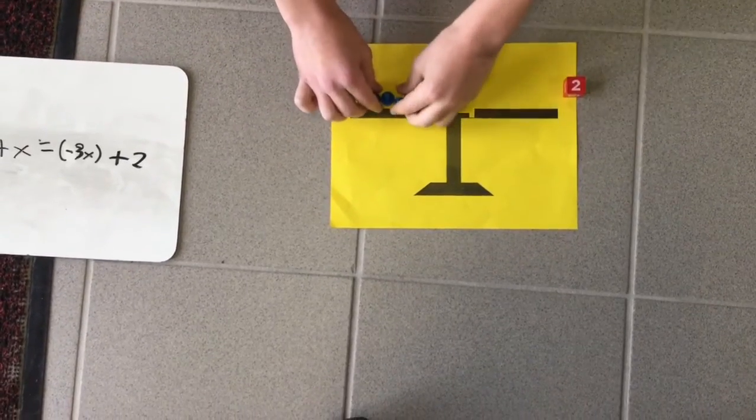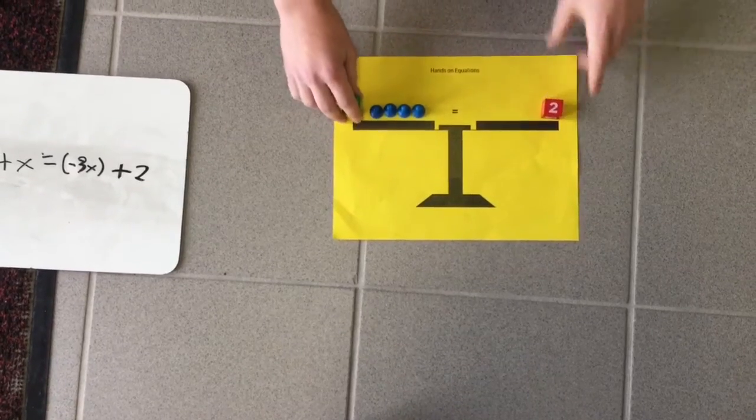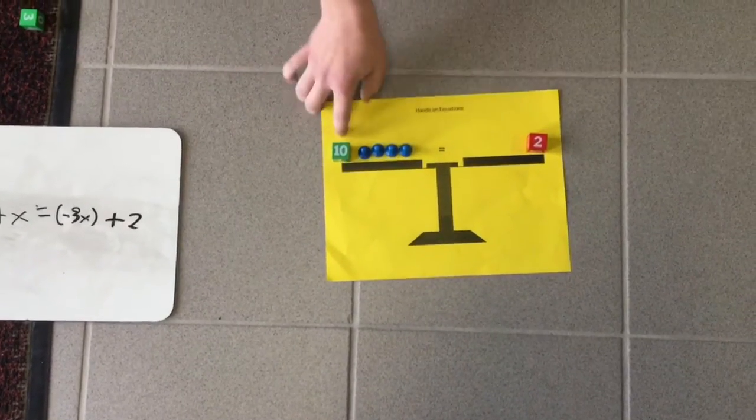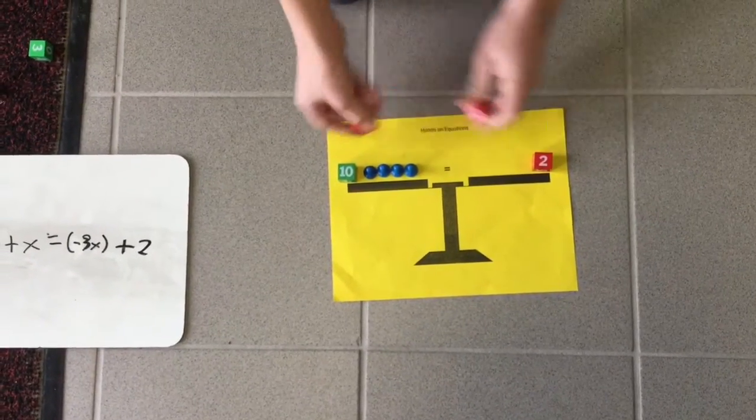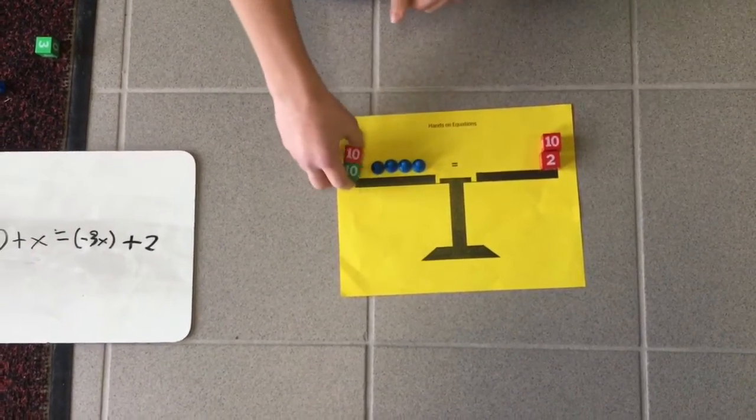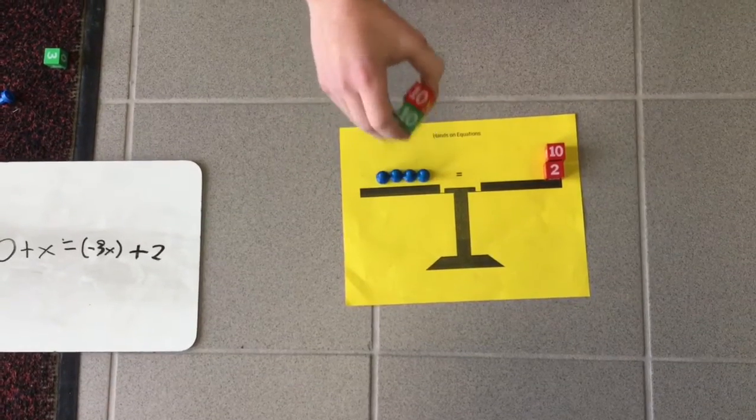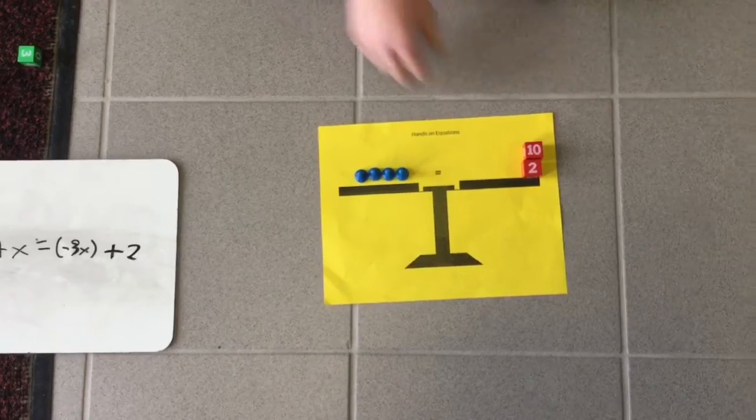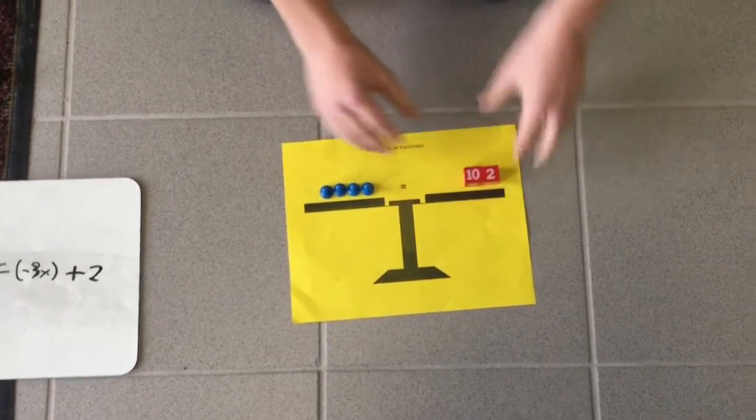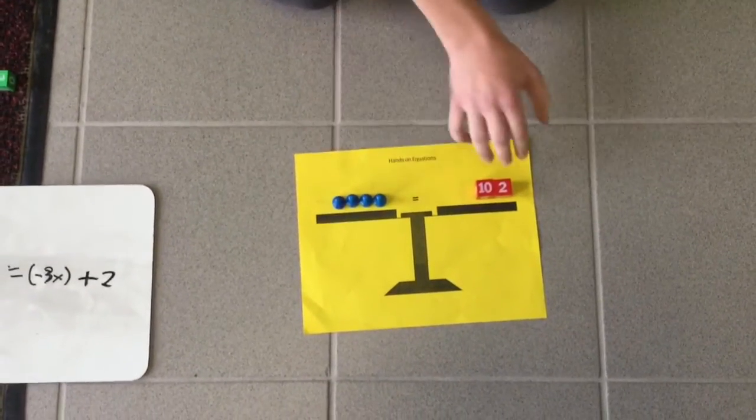So you have 4x over here, and next thing you want to do is get rid of this negative 10. To do that, you add a positive 10 to each side. Now since this is a pair of 0, you want to get rid of that. This is 12, so 4x equals 12.